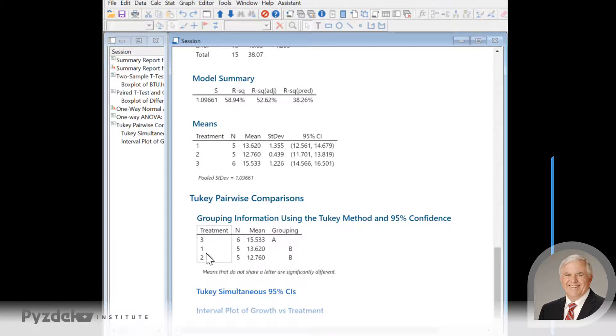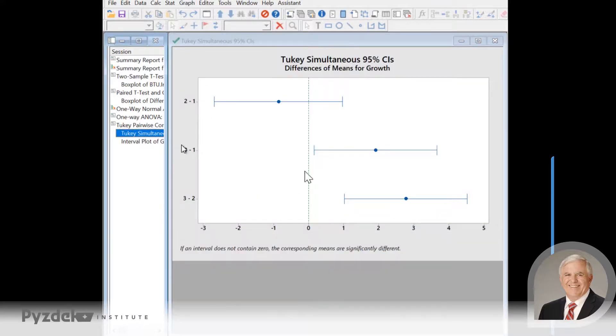Now, let's look at a graphical analysis of this information. Over here, we see that we're comparing the mean of one and two, and that mean does include zero. So treatment one versus treatment two, there is no significant difference.